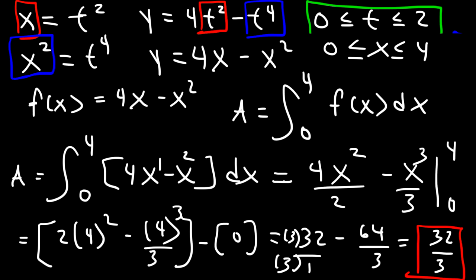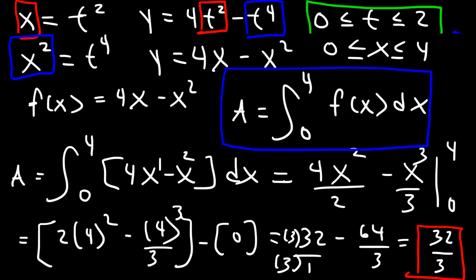You have two ways to find the area: you can use the parametric formula directly, or you can eliminate the parameter t and express y in terms of x, then integrate in the usual way. Sometimes it may be difficult to eliminate the parameter, in which case just use the parametric method.